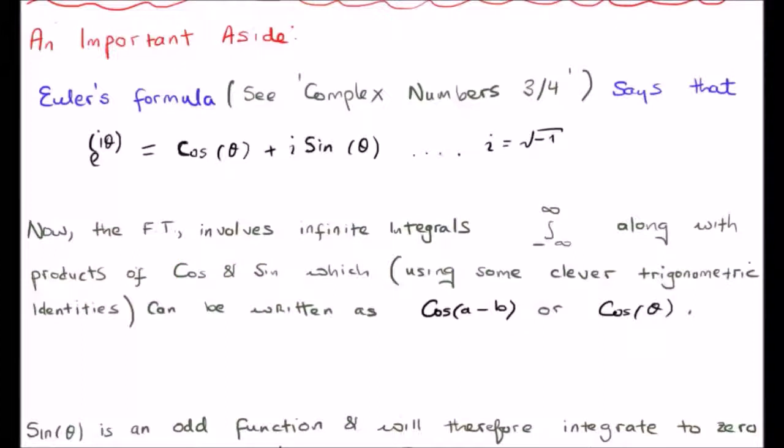Now, the products and sums of cosines and sines, using some clever trigonometric identities, can be written as a single cosine. So, as we'll see later when we look at the derivation of the Fourier transform, instead of having four terms, namely two cosines multiplied together,